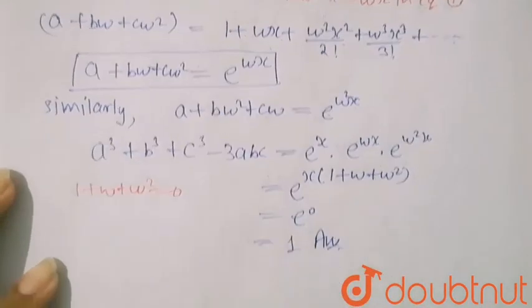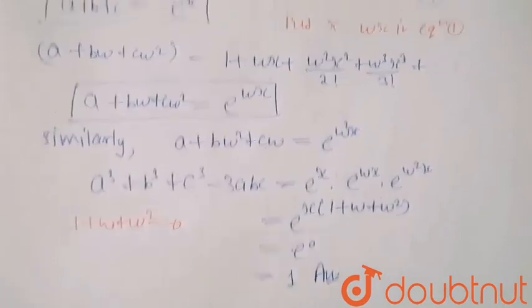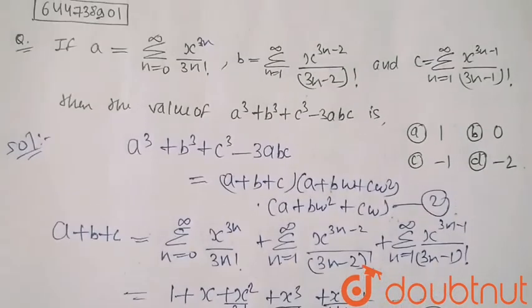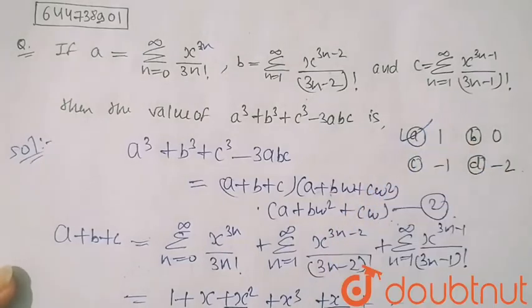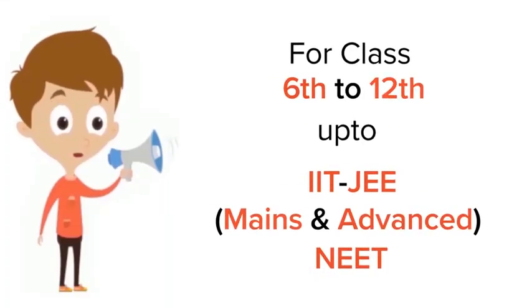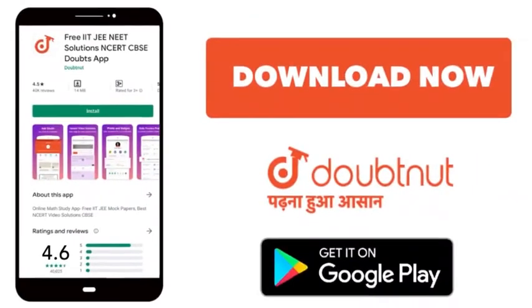So the answer is 1. From the options, option A is correct. Thank you. For class 6-12, IIT JEE, and NEET level — trusted by more than 5 crore students — download the Doubtnut app today.